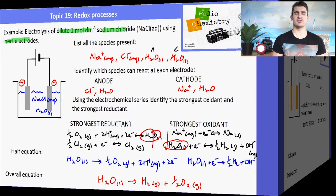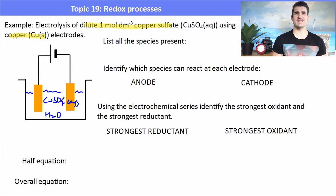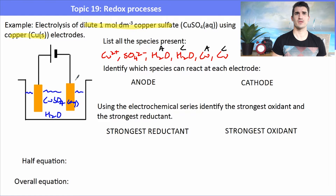Another example: electrolysis of a dilute 1 molar copper sulfate solution using copper electrodes. We identify all species present, including the electrodes, because they could react too. We have copper(II) ions, sulfate ions, water, and copper electrodes — writing water and copper electrodes twice for anode and cathode. Sulfate ions are very unreactive and won't do anything in this electrolytic cell, so we cross those out.